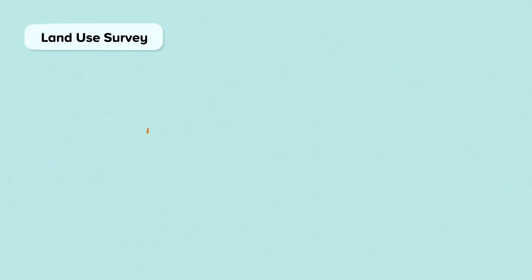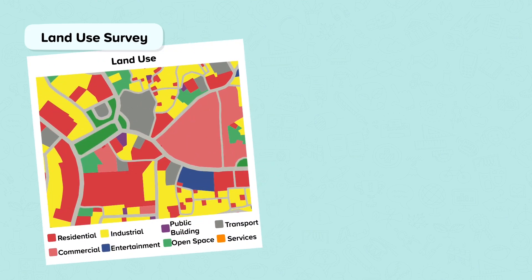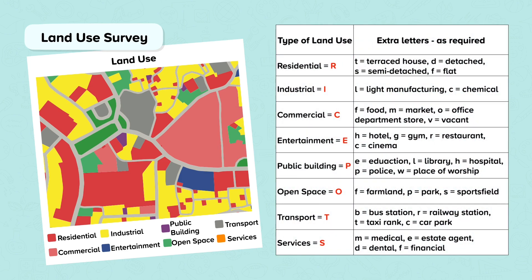Land use surveys can be completed by mapping or tallying how an area is being used. Surveys can be carried out along transects using a systematic sampling strategy to select the locations to record land use — for example, land use can be recorded every 10 metres. The sample can also be made more manageable by only recording the ground floor land use or only land use on a single side of the road. Land uses can be categorised for ease of analysis. A popular way of doing this is to use the rice pot system, where codes are recorded for each land use and further letters added to subdivide each group.